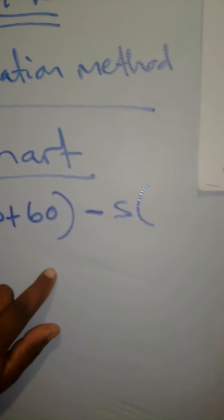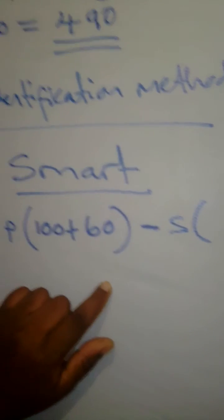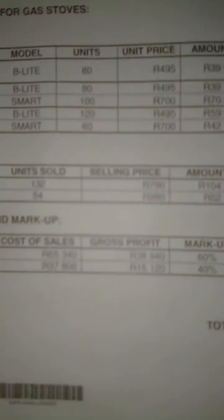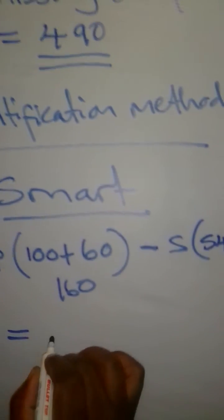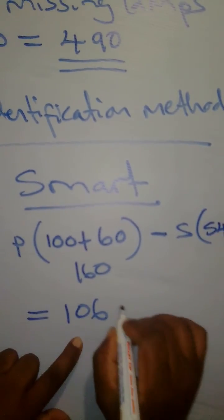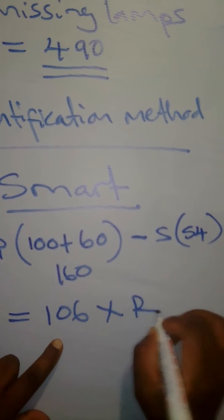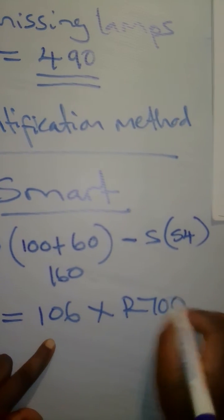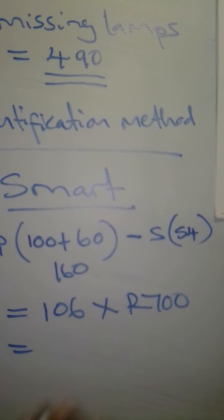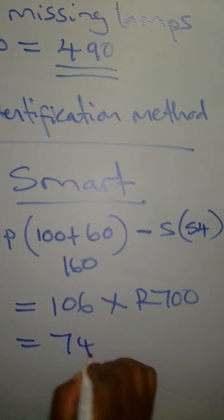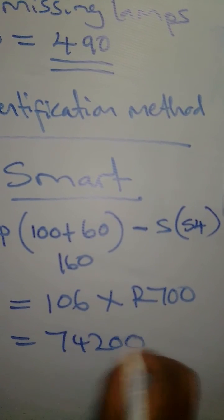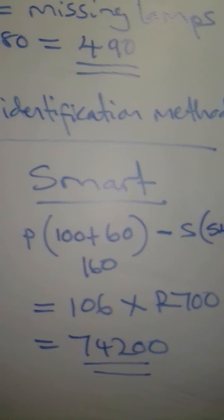For the Smart model, 54 items were sold. So 160 minus 54 gives us 106 units. At R700 per unit, this gives a total closing stock value of R74,200 for the Smart model.